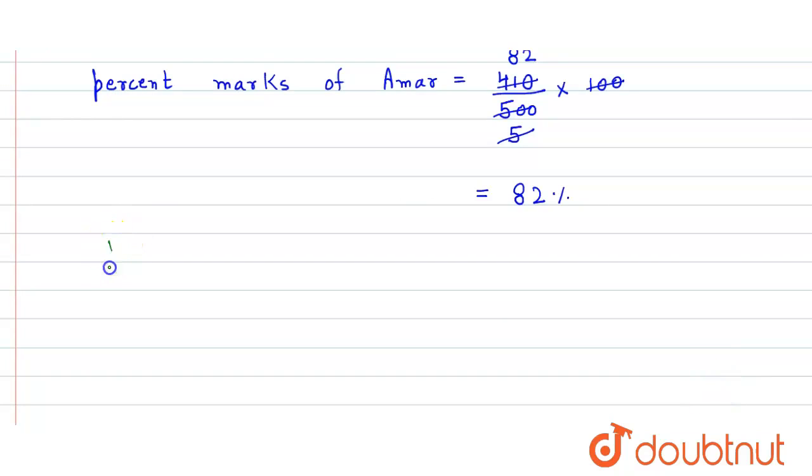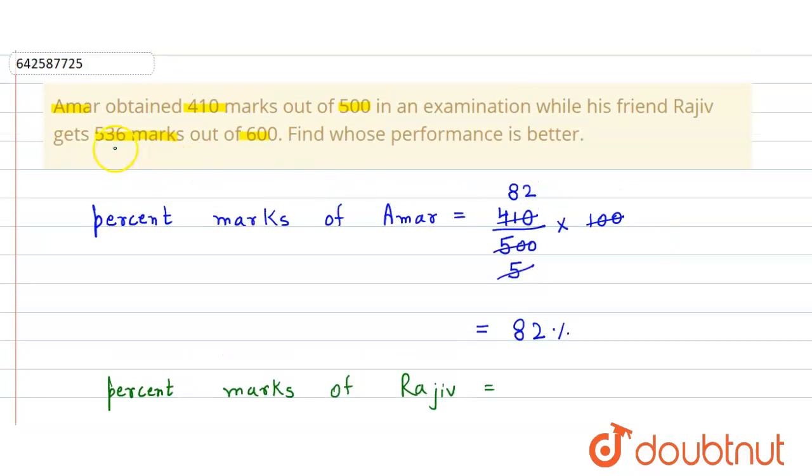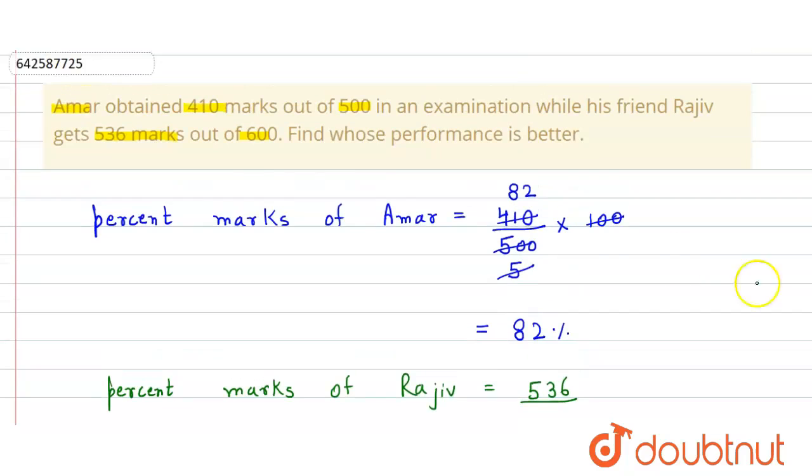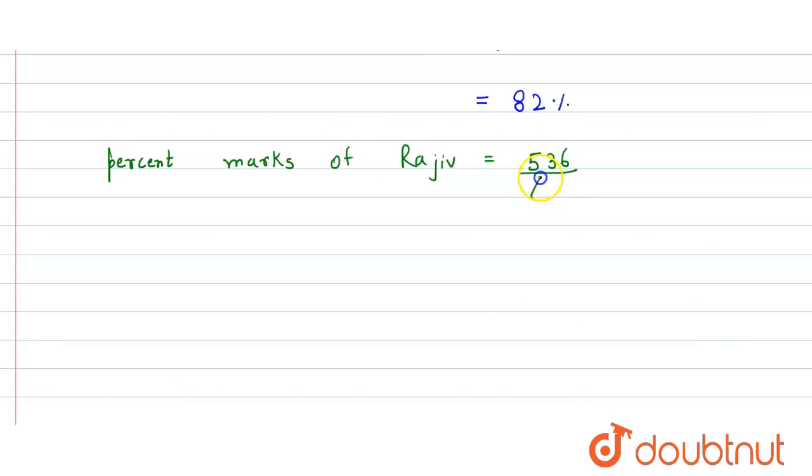The percent marks of Rajiv will be equals to the marks that he obtained in the examination, 536, divided by total marks 600, and then into 100.